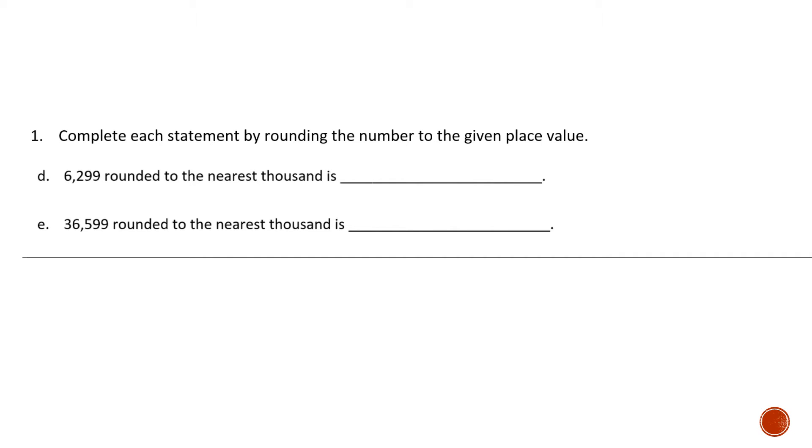6,299 rounded to the nearest thousand is. I am going to underline the digit in the thousandth place first, and that is the 6.